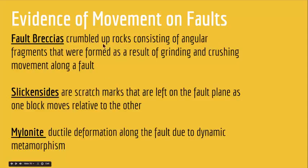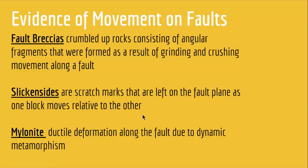Fault breccias are crumbled-up rocks consisting of angular fragments that were formed as a result of grinding and crushing movement along a fault. When the parts move on each other — whether in a strike-slip or dip-slip fault — they create these crumbled rocks with angular fragments. Slickensides are scratch marks left on the fault plane as one block moves relative to the other, besides the crushing and grinding that creates angular fragments.